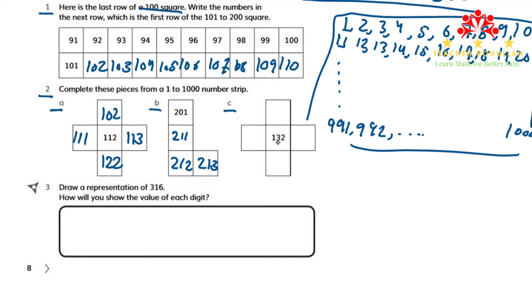In part C, we have 132 in the center. So to the left of it is 131, and to the right of it is 133. Above 132, we have 122. And below 132, we have 142.